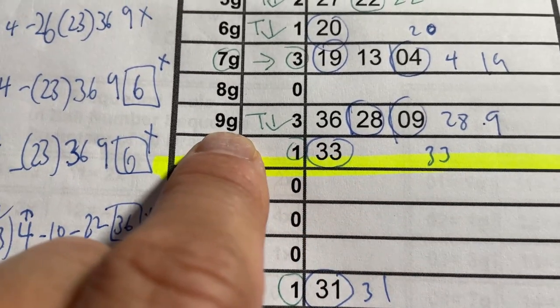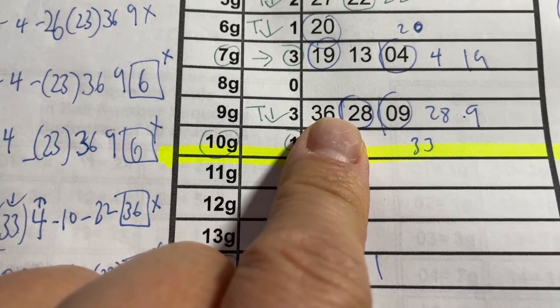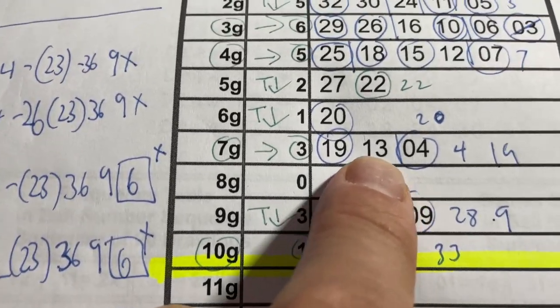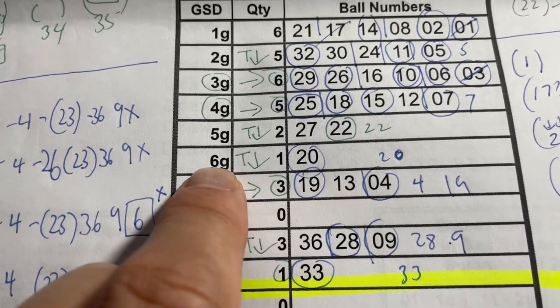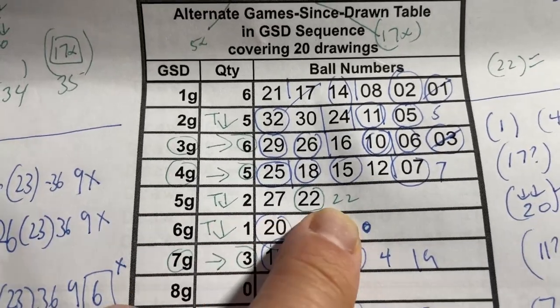And in 9G, specifically 36 and 9. In 7G, in 6G, 5G, number 22.